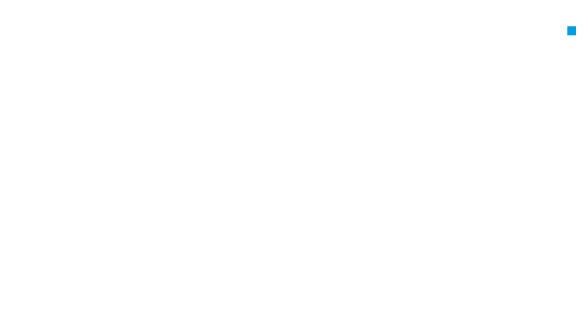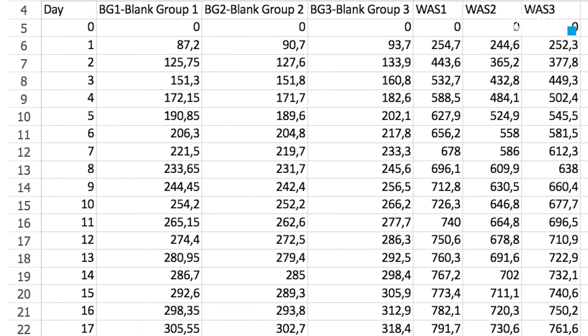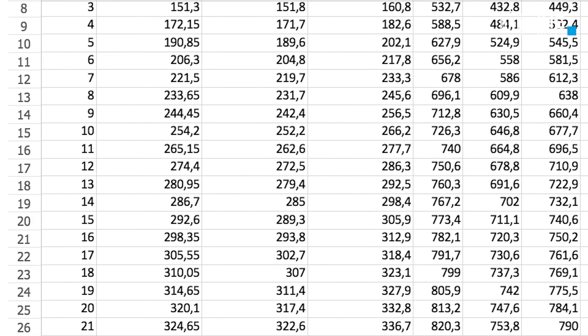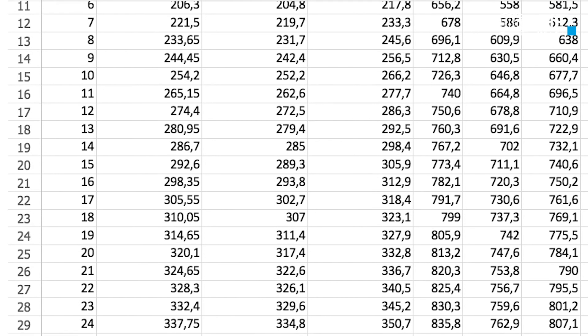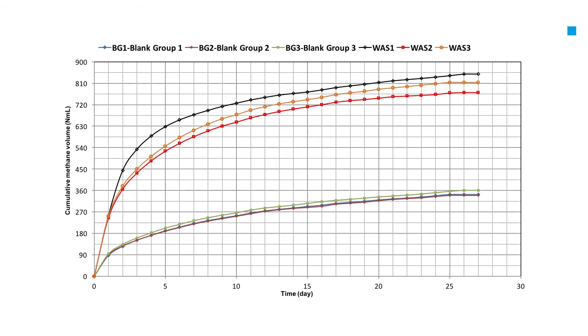After the test is completed, stop the program when the gas production has stabilized. Download the data from the program. Afterwards, use the data to draw the figure and carry out the required data processing to calculate the biomethane potential of the concentrated waste-activated sludge.